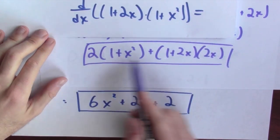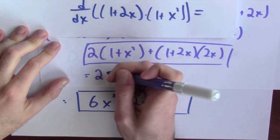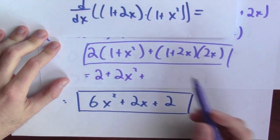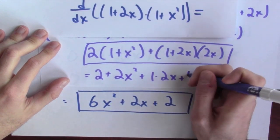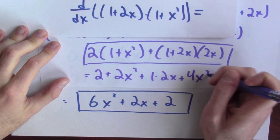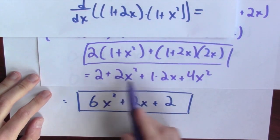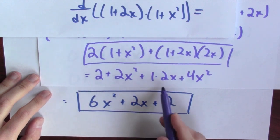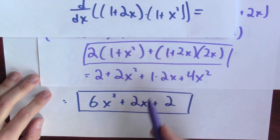I can expand out the first answer. This is 2(1 + 2x²) plus (1)(2x) plus (2x)(2x) = 4x². Now: 2x² + 4x² gives 6x², and 1 times 2x gives 2x. These are in fact the same.